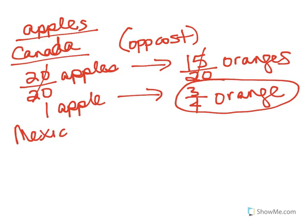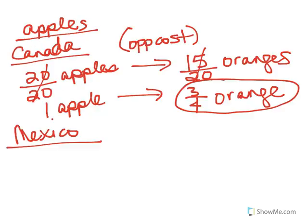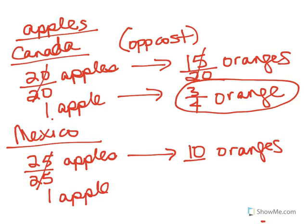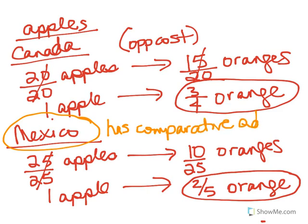Now we do the same thing for Mexico. Every time Mexico produces 25 apples, they give up 10 oranges. Dividing both sides by 25, we get that 10 divided by 25 is two-fifths. So for every one apple that Mexico produces, they give up two-fifths of an orange. Now we compare: Canada gives up three-fourths of an orange; Mexico gives up two-fifths of an orange. Two-fifths is clearly less than three-fourths. Therefore, Mexico has the comparative advantage in the production of apples because they give up less.